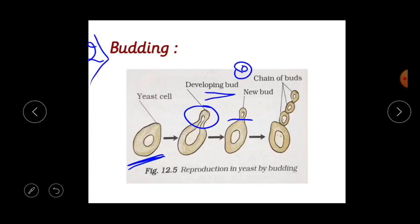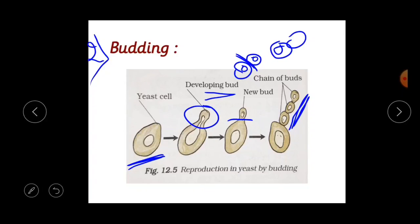The bud grows and gets detached from the parent cell to form a new yeast cell. The new yeast cell grows, matures and produces more yeast cells. Sometimes another bud arises from the bud, forming a chain of buds. In this continuous process, a large number of yeast cells are produced in a short time. This is budding in a single-cell organism.